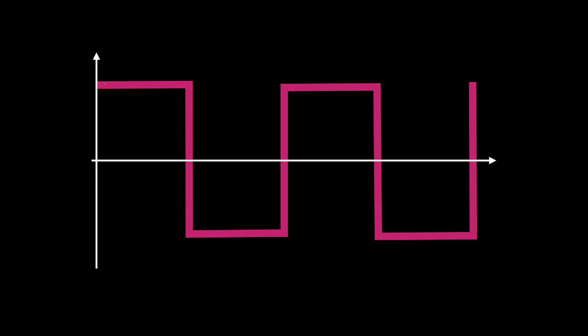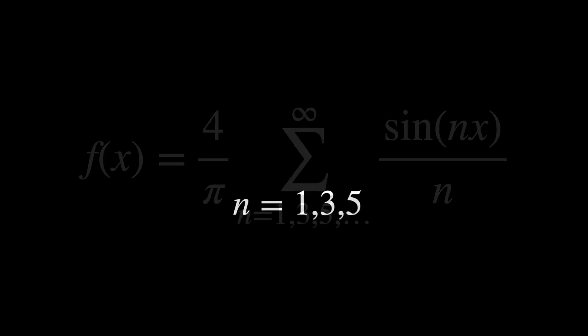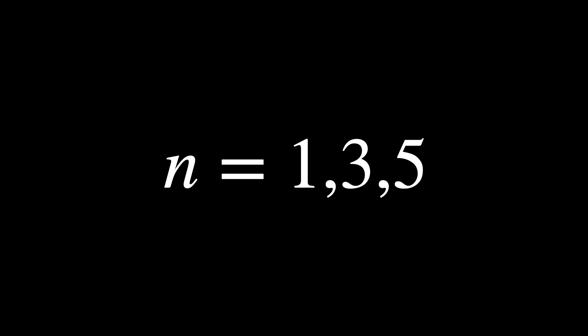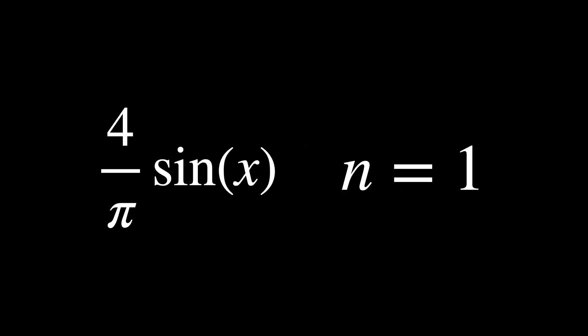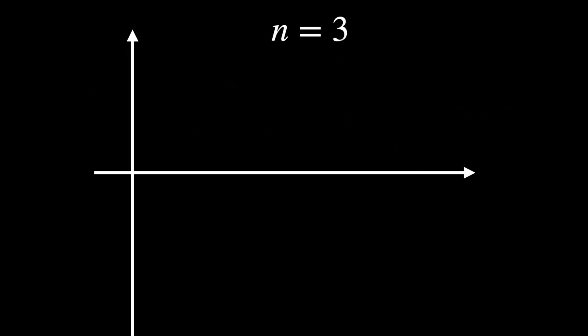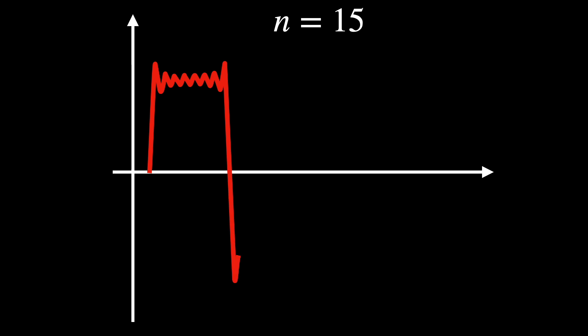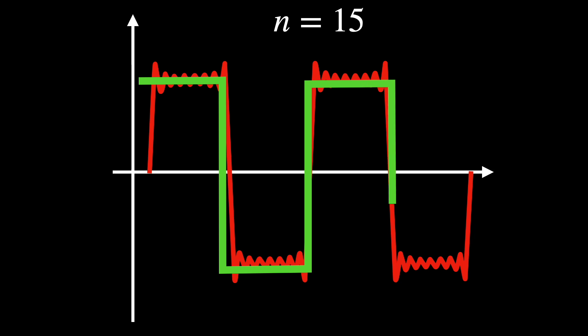Exactly — as more terms are added, the sum includes more frequency components, allowing it to better approximate the original function or shape. A common example is the approximation of a square wave using a Fourier series. A square wave alternates between two values with instantaneous transitions, or jumps, between them. The Fourier series of a square wave uses only odd values of n: 1, 3, 5, and so on, reflecting the fact that the square wave is an odd function. With just the first term, the approximation is very crude and resembles a single sinusoidal wave. Adding more terms, the approximation looks more like a square wave, with flatter tops and bottoms, and the transitions between −1 and 1 become steeper and closer to the ideal vertical jumps of a true square wave.